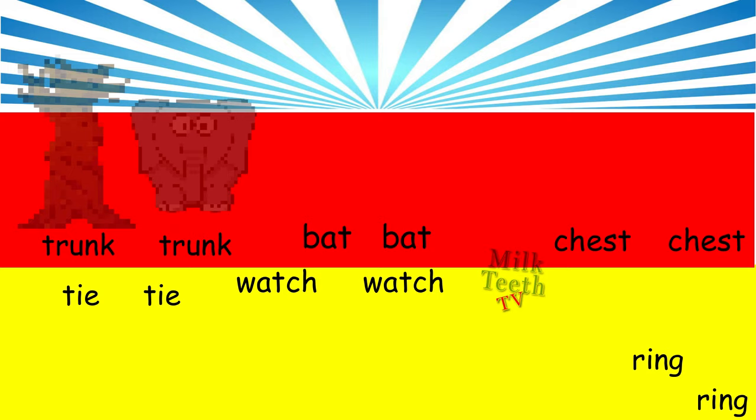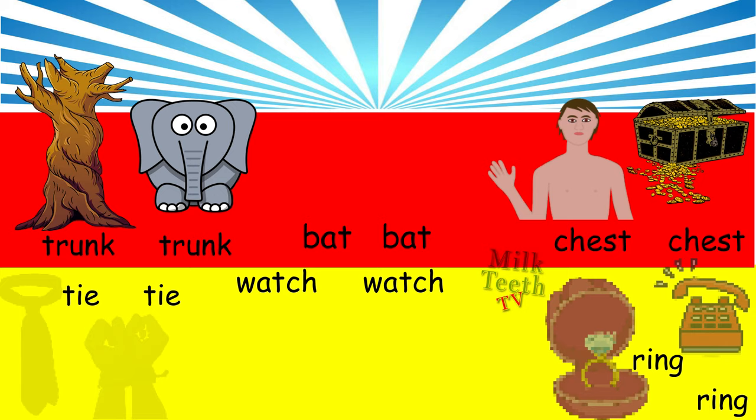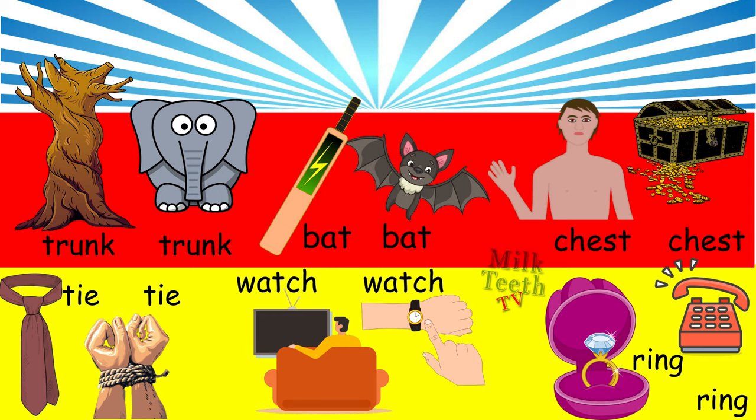Time to revise. Trunk, chest, ring, tie, watch, bat — all are homographs.